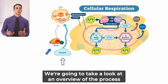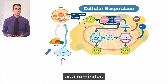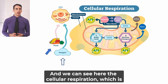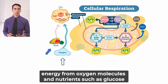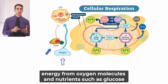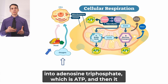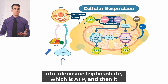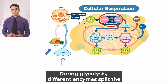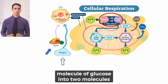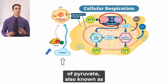Here we're going to take a look at an overview of the process as a reminder. We can see cellular respiration, which is the process that takes place in cells to convert chemical energy from oxygen molecules and nutrients such as glucose into adenosine triphosphate — ATP — and then releases waste products. During glycolysis, different enzymes split the molecule of glucose into two molecules of pyruvate, also known as pyruvic acid.